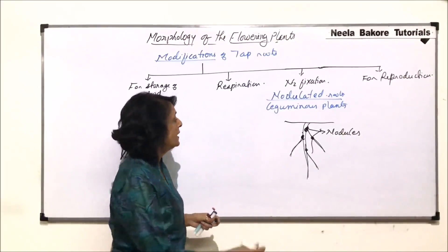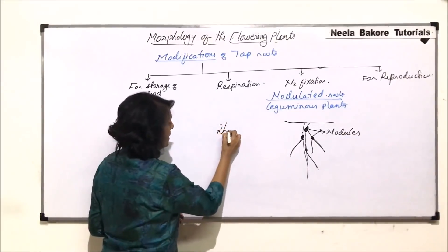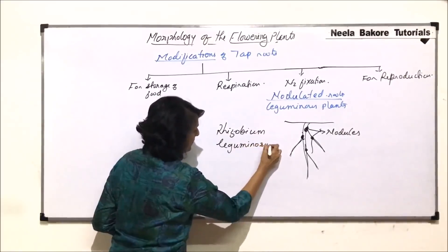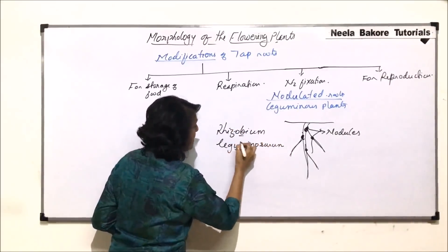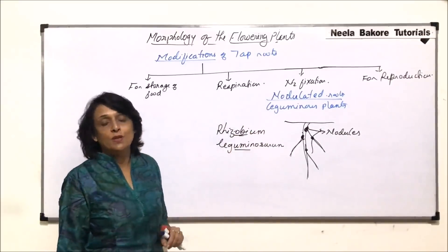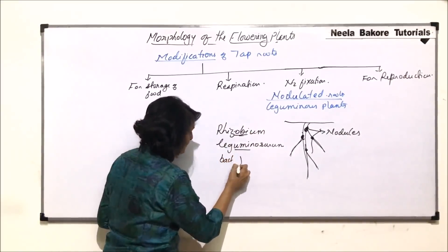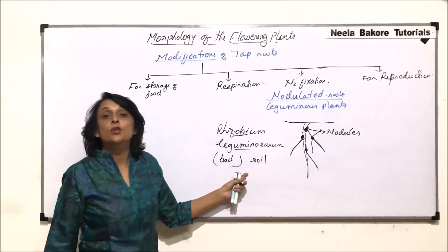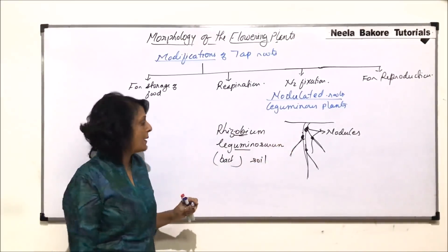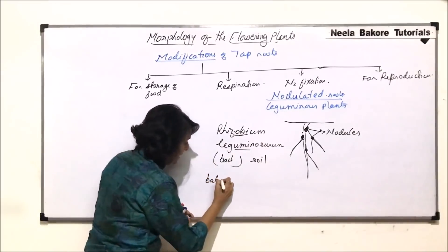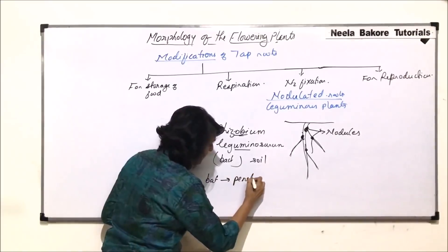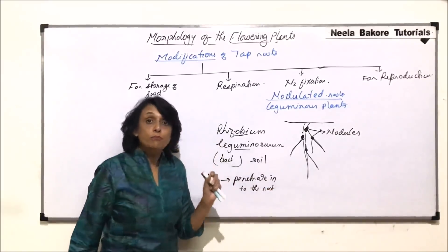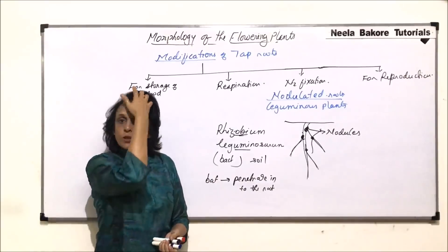Now, what exactly has happened for this nodule formation? The bacterium called Rhizobium leguminosarum, which is symbiotic with the roots of leguminous plants, is a bacterium found in soil. It penetrates into the roots of the leguminous plant, so number one, this bacterium is going to penetrate into the root.